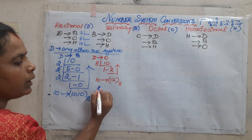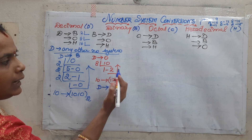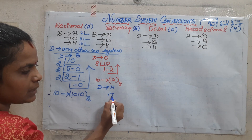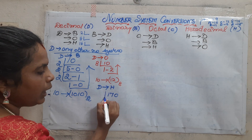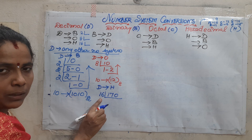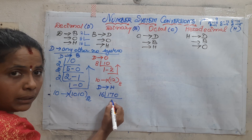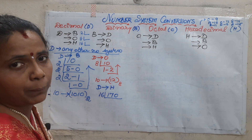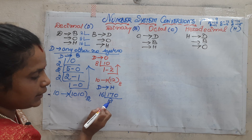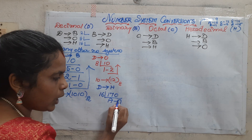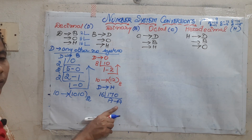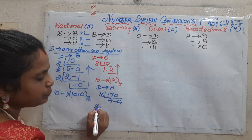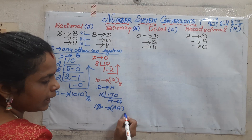Now we will move on to decimal to hexadecimal. We will take a bigger number — 10 is too small for hexa, so we take 170. Dividing by 16: 16 tens are 160, remainder is 10. I cannot write 10 as a remainder here — in hexadecimal only 0 to 9 are allowed as digits, and 10 is represented as A. Students, be very careful: if you write 10 here you will get a wrong answer. So 170 is equivalent to AA in hexadecimal.